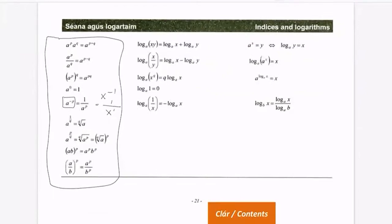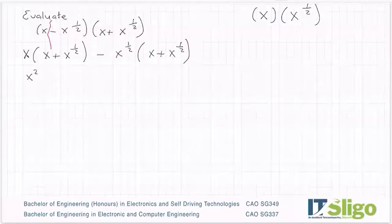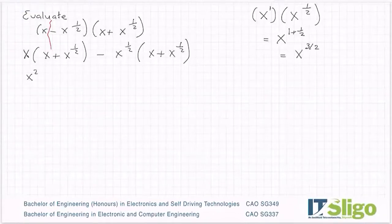So again, just to show you the rules of indices. This is this top one here, this is how it presents itself. You can see the base number is the same, a, and you have the base number to a power, the same base number to a power, and it tells you to add the powers. So how do I apply that here? Well, x is x to the power of one. So you can see my base number is the same, it's x and x, and so it's telling me to add the powers. So x to the power of one plus a half. If you put that into the calculator, you'll get x to the power of three over two.